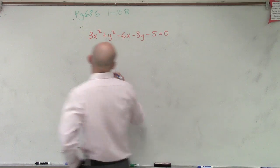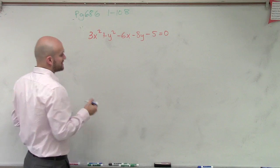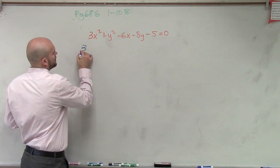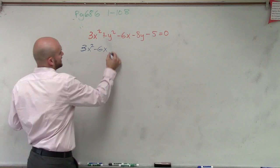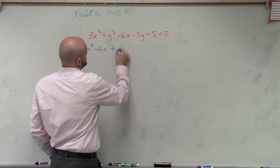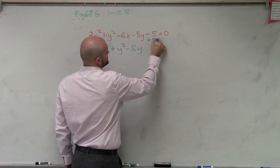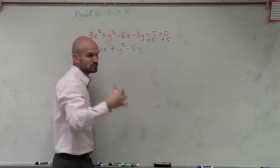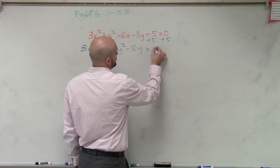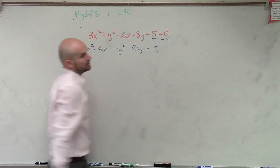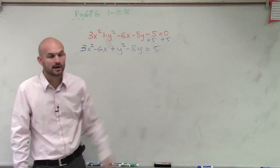The first thing I'm going to do is rewrite this so my x's and my y's are next to each other. So I have 3x squared minus 6x plus y squared minus 8y, and I'm going to add the 5 to the other side, because it always equals 1 — it doesn't equal 0, it equals 1. So we know there at least has to be a number over there to get this to 1.